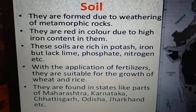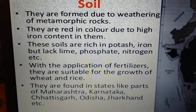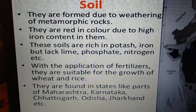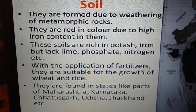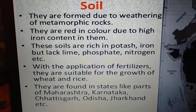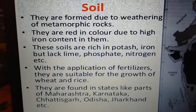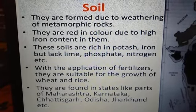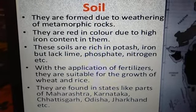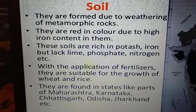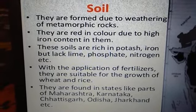Red and yellow soils are found in parts of Maharashtra, Karnataka, Chhattisgarh, Odisha, and Jharkhand.